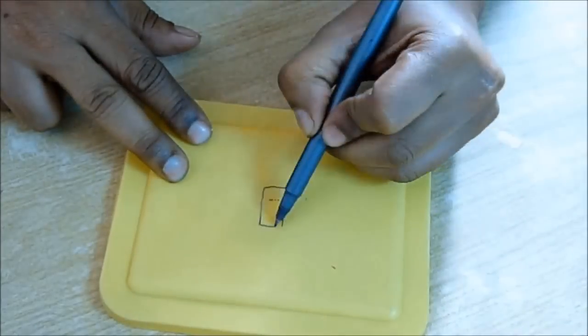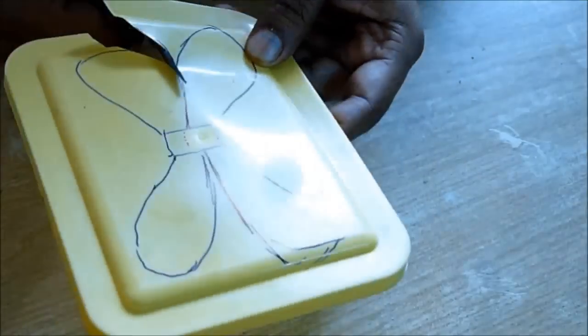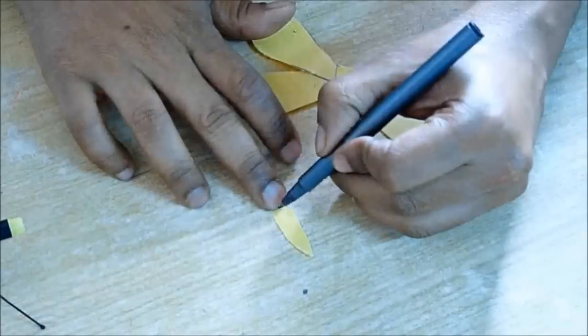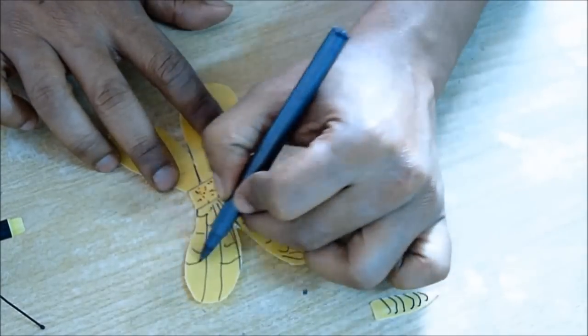Take a plastic casing and draw the wings on top of it and cut it, cut some tail and draw it, also draw on top of the wings.